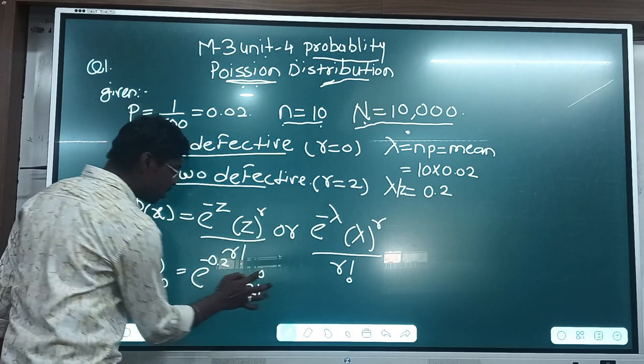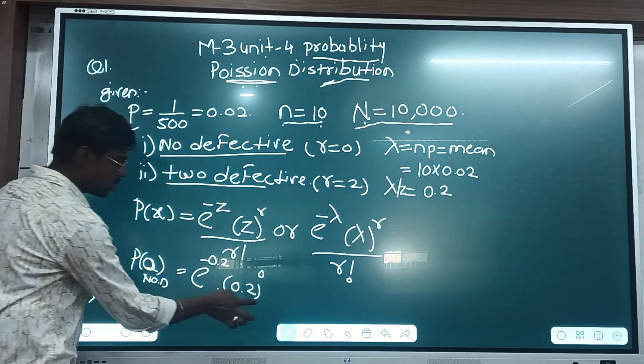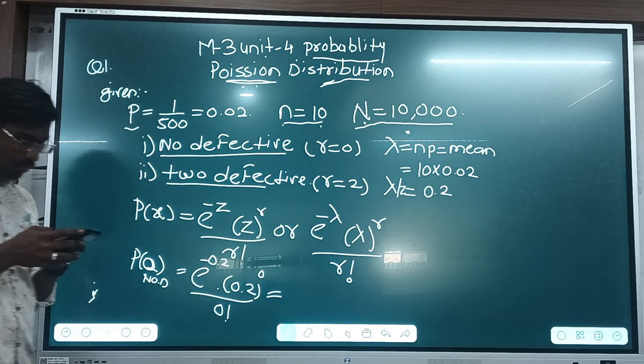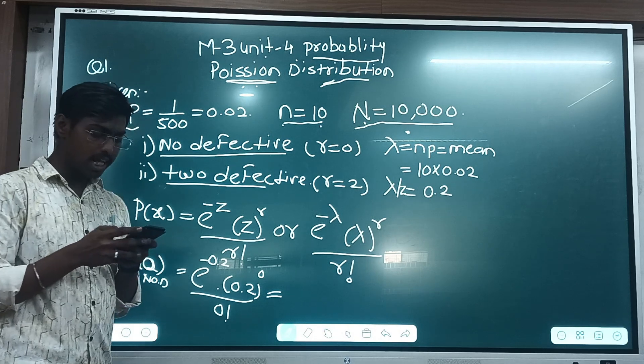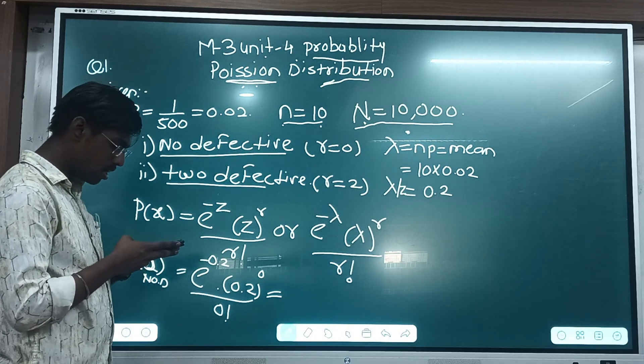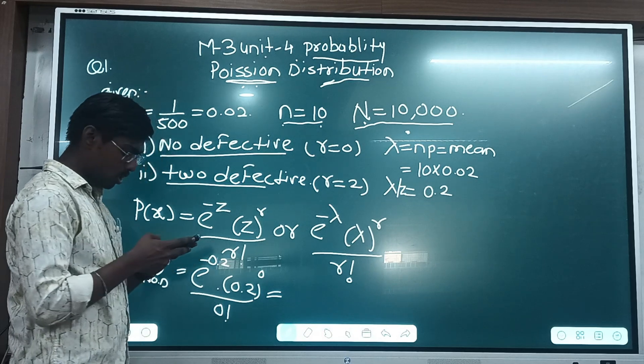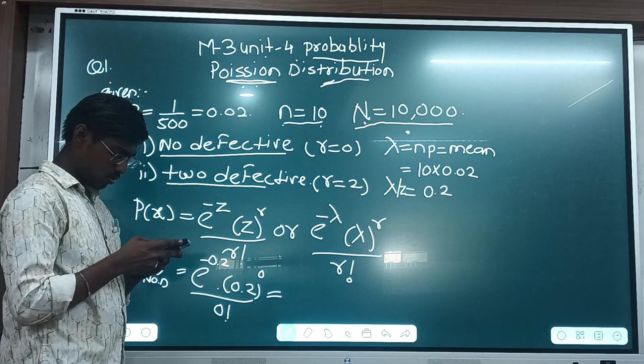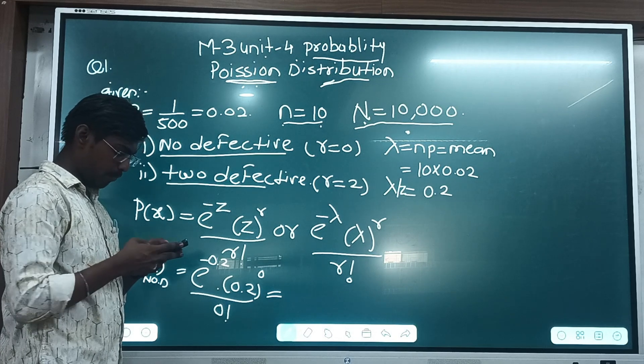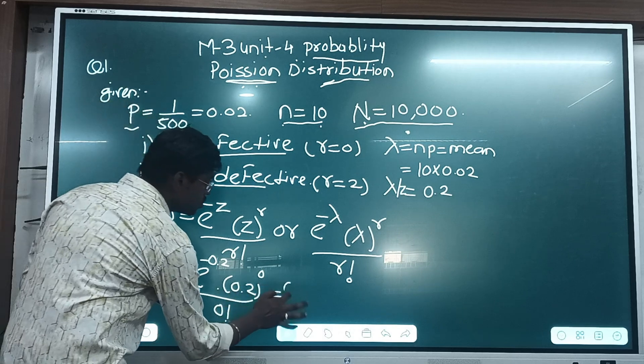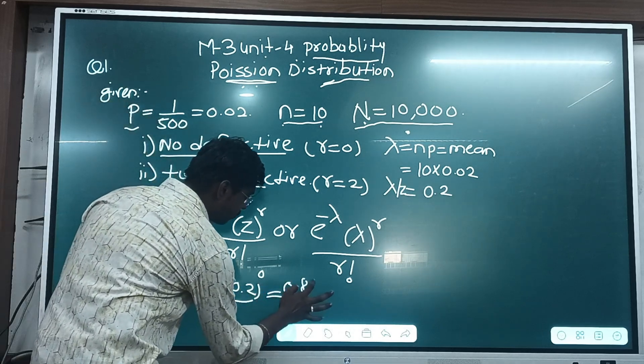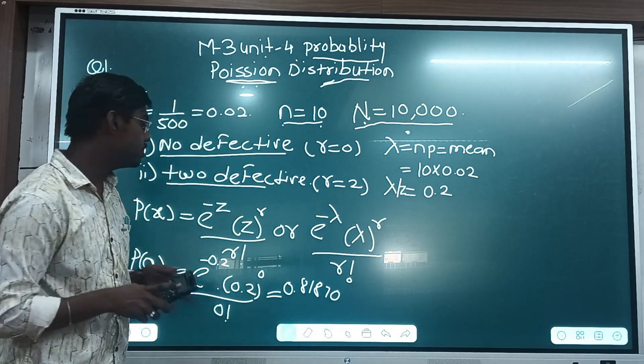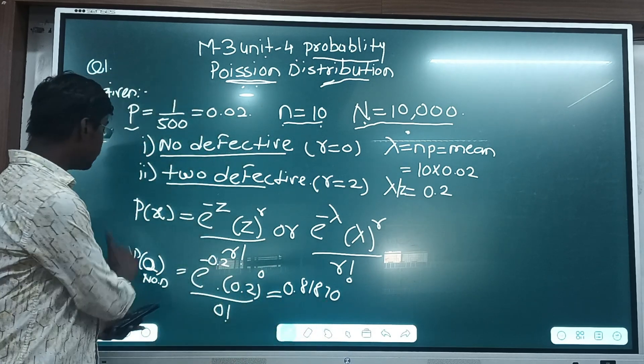So z value or lambda value is 0.2. So r is, our r in this first condition, no defective is 0. After that, 0 factorial. Find by using calculator the approximate answer, and write 4 to 5 decimals. So answer is 0.81870. Write minimum 4 to 5 decimals after the point.